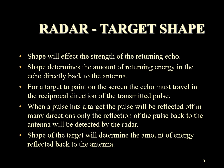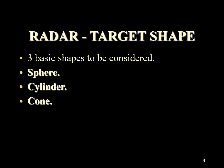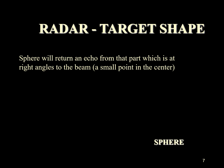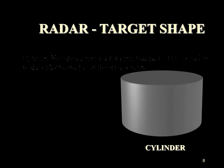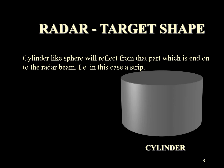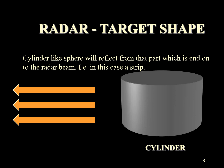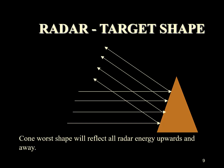Let's consider some of the shapes of the target. The three shapes to be considered are the sphere, cylinder, and cone. The sphere will only return an echo from that part which is at right angles to the beam — a very small reflecting point in the center — and the rest of the pulse is reflected outwards and away. The cylinder, like the sphere, will only reflect from the part which is end-on to the radar beam — in this case a reflecting strip. If the cylinder is laid horizontally it will still reflect from the strip along the center, but only if the cylinder is lying at right angles to the radar beam. The cone is the worst radar-reflecting shape — it reflects all the radar energy upwards and away.